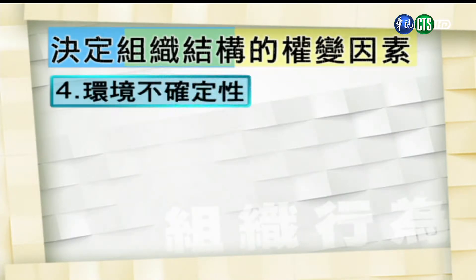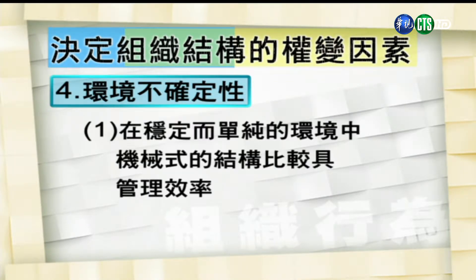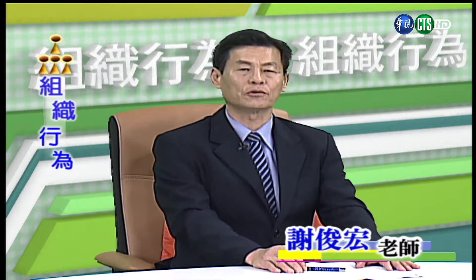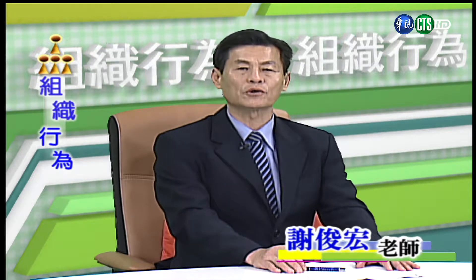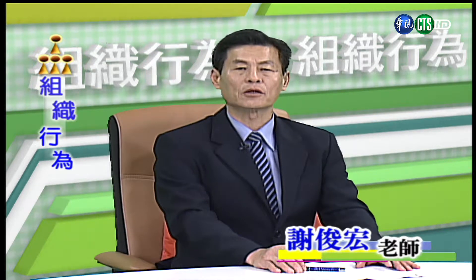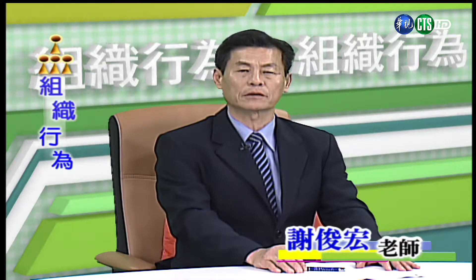第四个权变因素是环境的不确定性。研究报告显示，在稳定而单纯的环境中，机械式的结构比较具备管理效率。反过来讲，面临今日多变的全球化环境，竞争对手产品推陈出新，顾客对高品质与快速配送需求提高，机械式组织已不足以应付快速的变化及环境不确定性的情况。